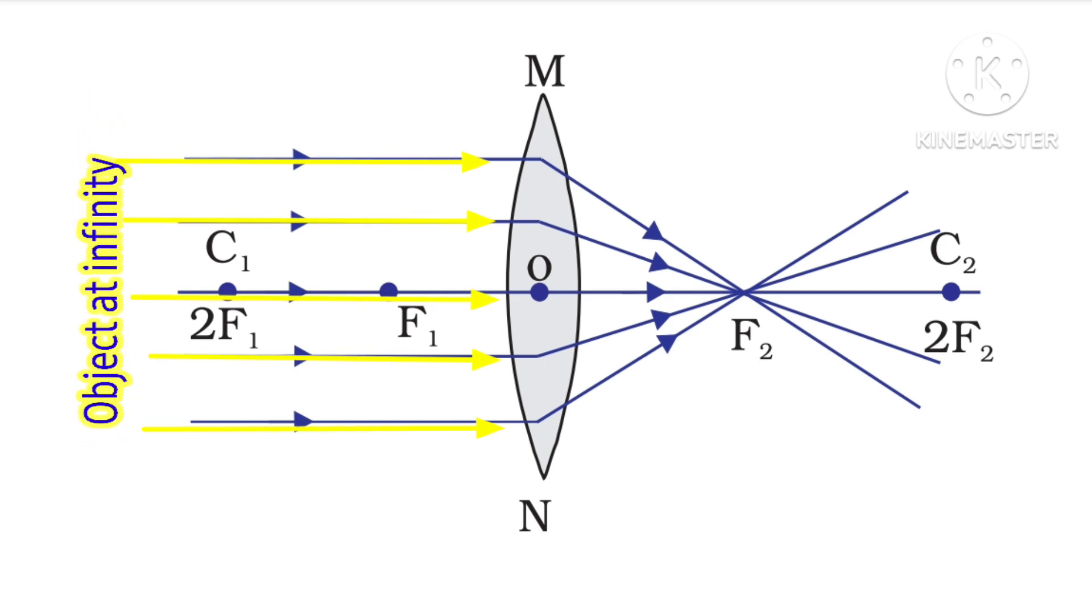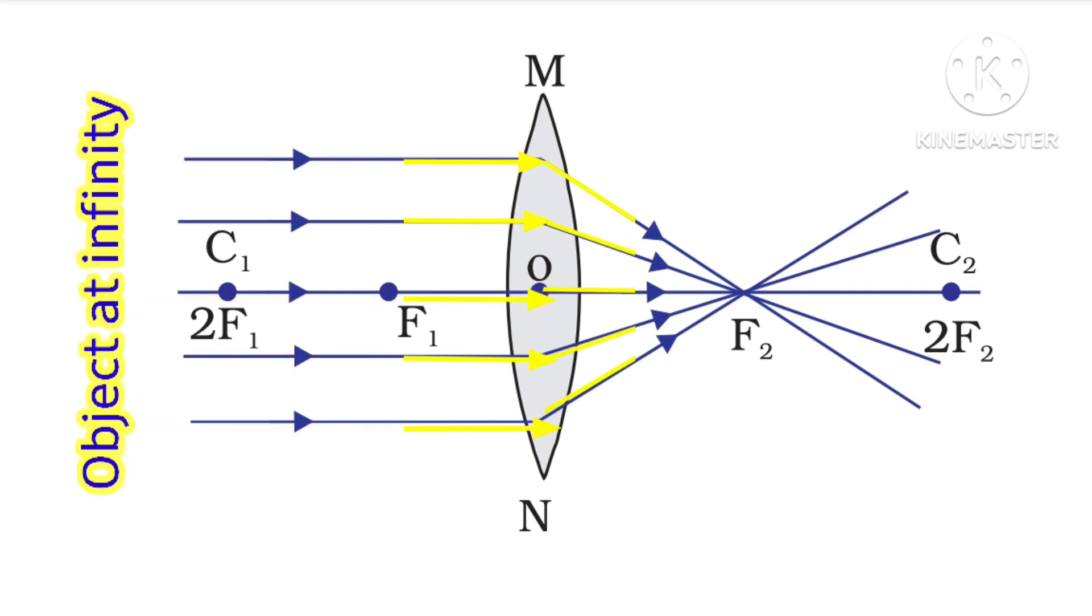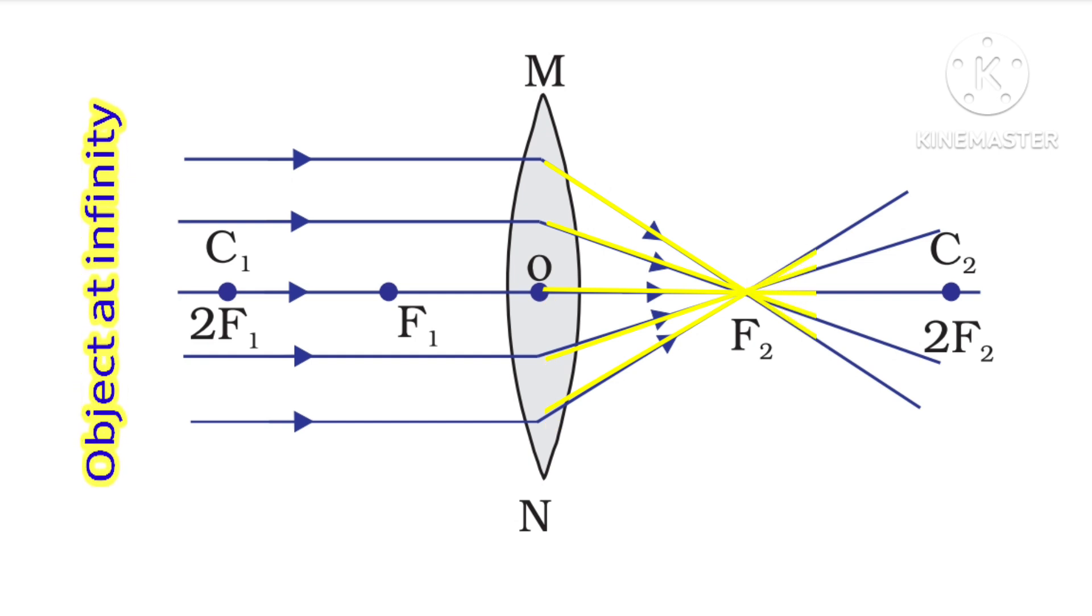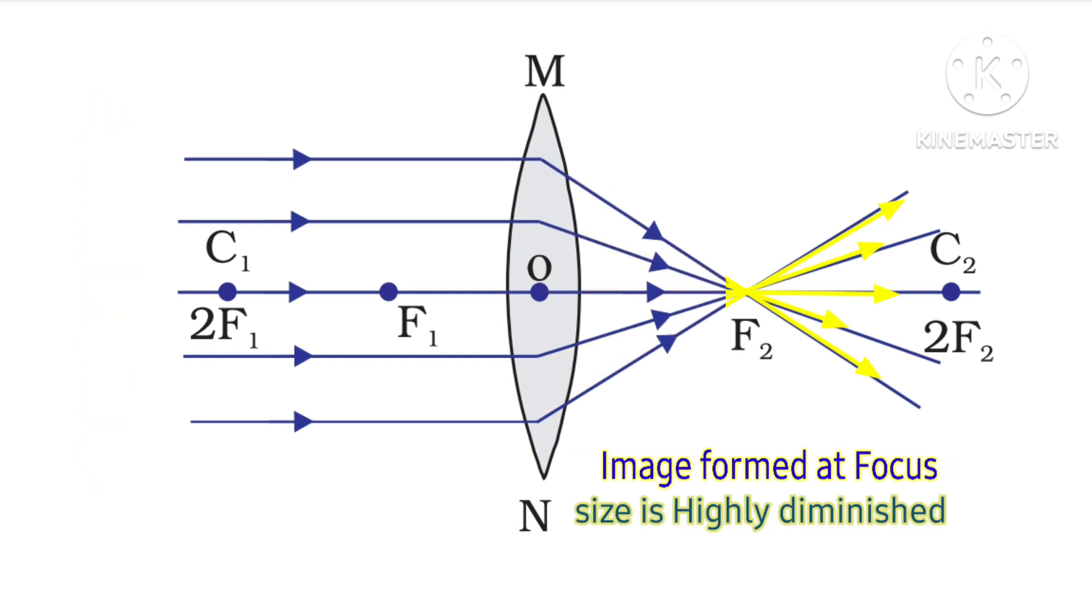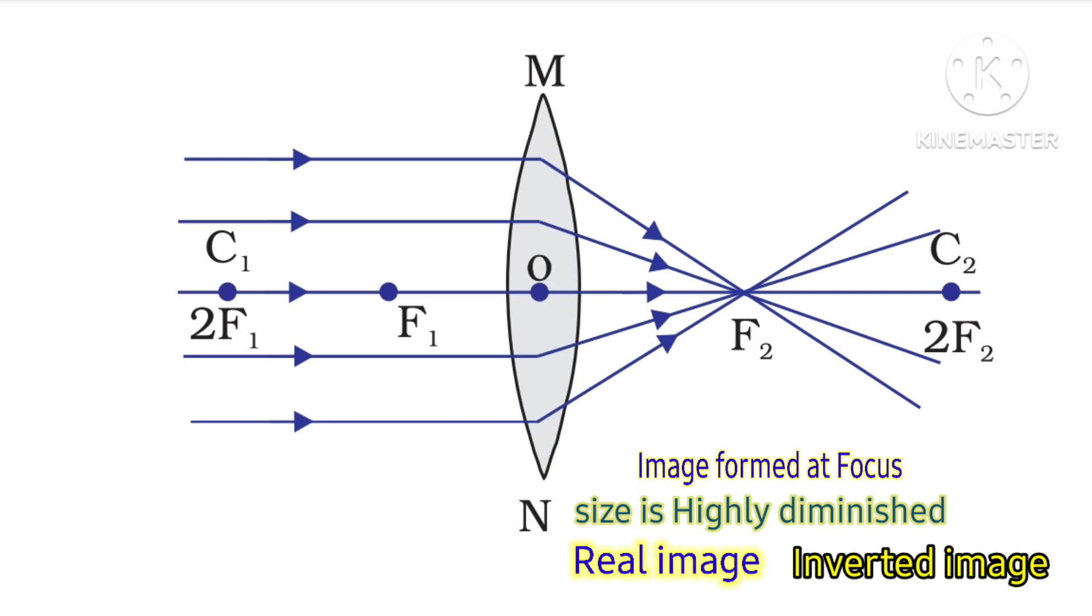After refraction, these parallel rays pass through the focus, so the image is formed at focus. The image size is highly diminished. All the refracted rays are meeting at one point, so the image is real and inverted.